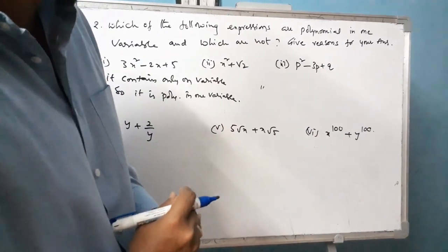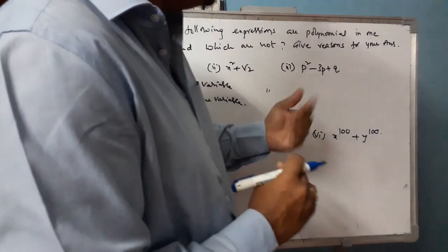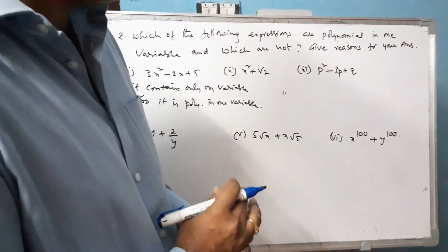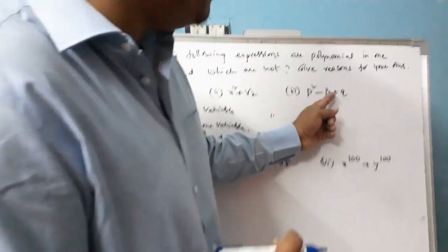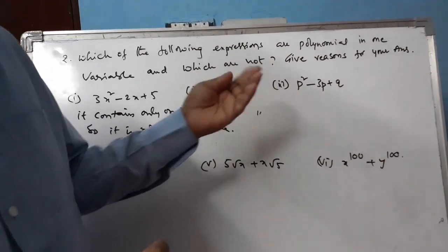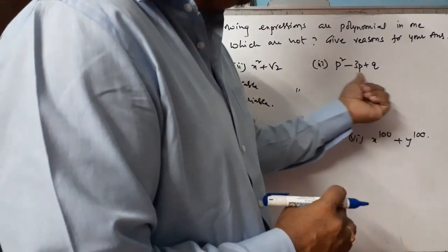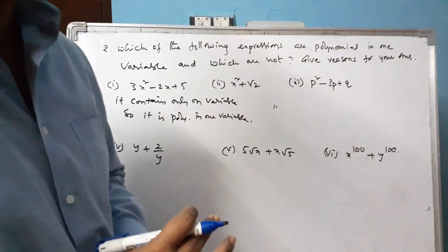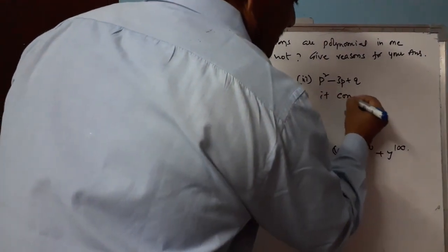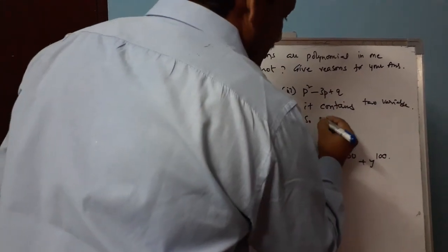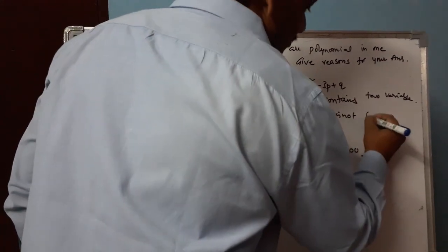Third expression: the coefficients are real numbers and the powers are 2 and 1, which are non-negative integers, so it is a polynomial. However, it contains two variables p and q. Therefore, it is not a polynomial in one variable.